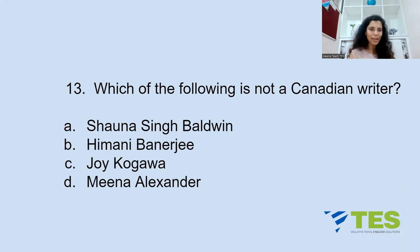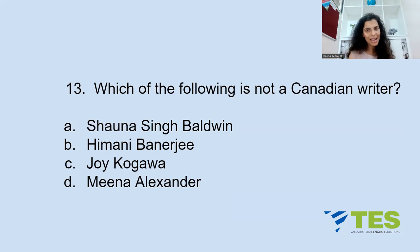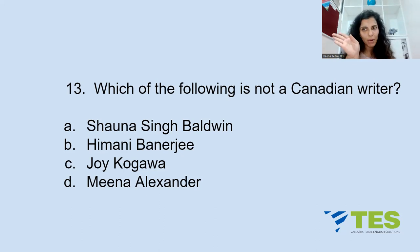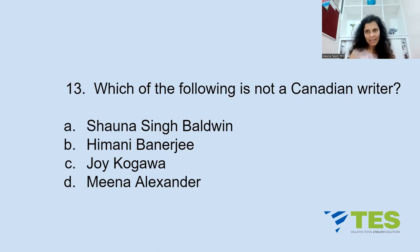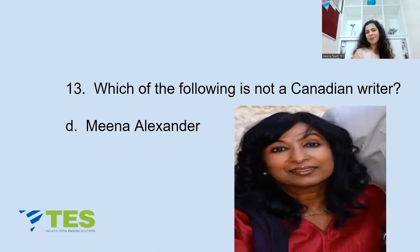Question 13: Which of the following is NOT a Canadian writer? A: Shauna Singh Baldwin, B: Himani Bannerji, C: Joy Kogawa, or D: Meena Alexander. The answer is Meena Alexander — she is an Indian-American writer, not Canadian. Shauna Singh Baldwin, Himani Bannerji, and Joy Kogawa all belong to Canada.